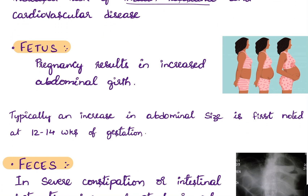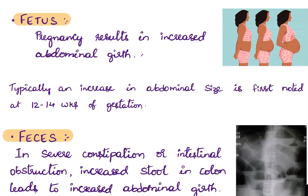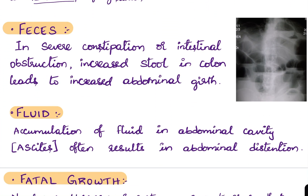The next F is fetus. Pregnancy usually results in increased abdominal girth; an increase in abdominal size is typically first noted at 12 to 14 weeks of gestation. The other F is feces — in severe constipation or intestinal obstruction, increased stool in the colon leads to increased abdominal girth.